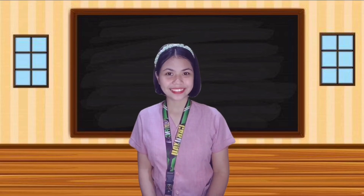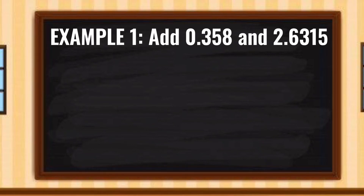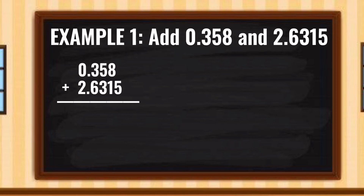To review from what we sang, I have a problem set for you. Let's give it a try. We have example number 1: Add 0.3580 hundredths and 2.6315 ten-thousandths. Step 1: arrange the digits in columns and align the decimal points. Step 2: insert zeros in empty decimal place values if needed so that all numbers have the same number of decimal places. Step 3: add as with whole numbers, and place the decimal point between the digits vertically aligned to all the addends.